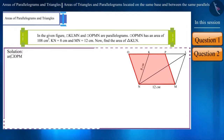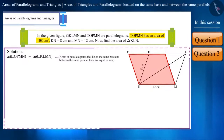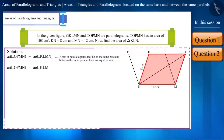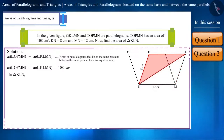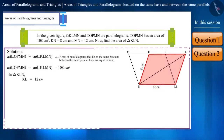Therefore, the area of these two parallelograms will be equal. The area of parallelogram OPMN is 108 cm², as given to us. Therefore, the area of parallelogram KLMN will also be 108 cm². In triangle KLN, side KL measures 12 cm because its opposite side MN measures 12 cm in parallelogram KLMN.